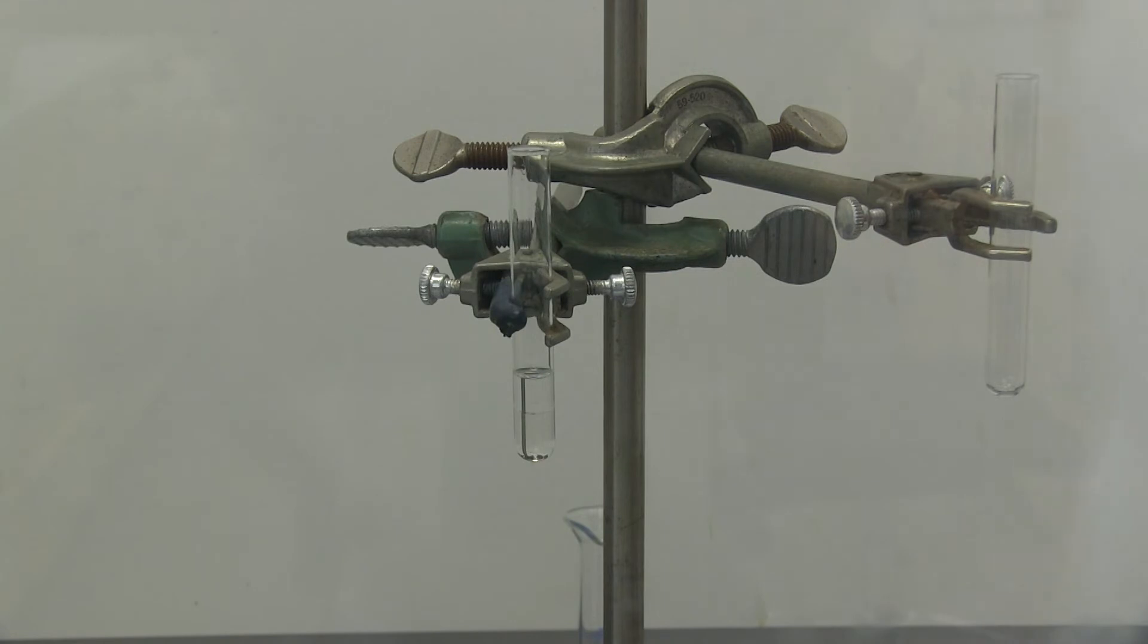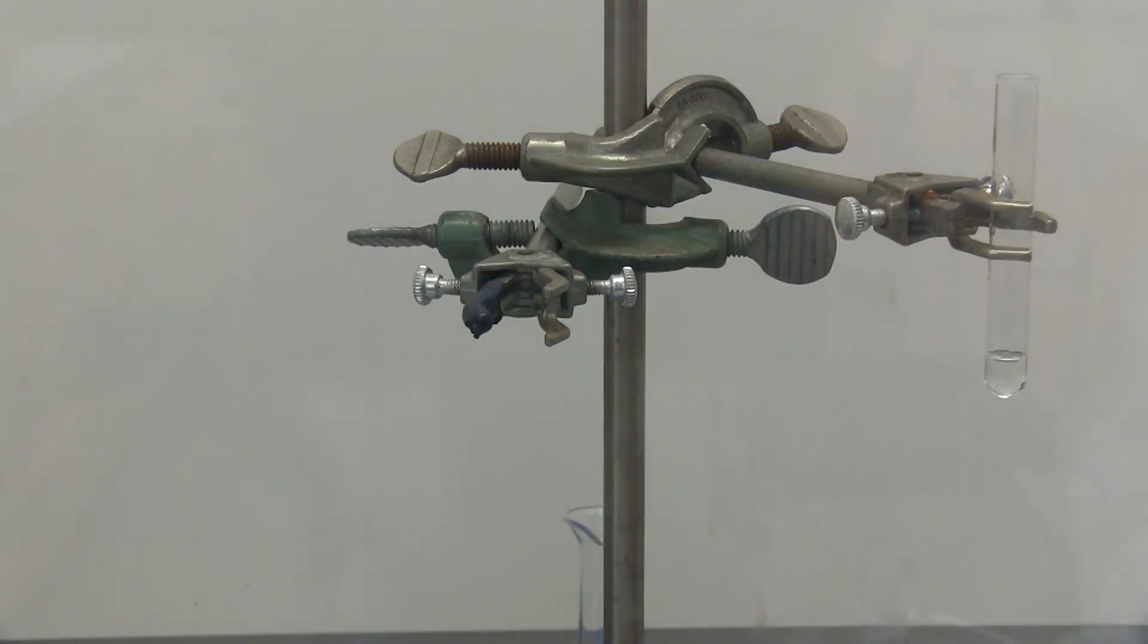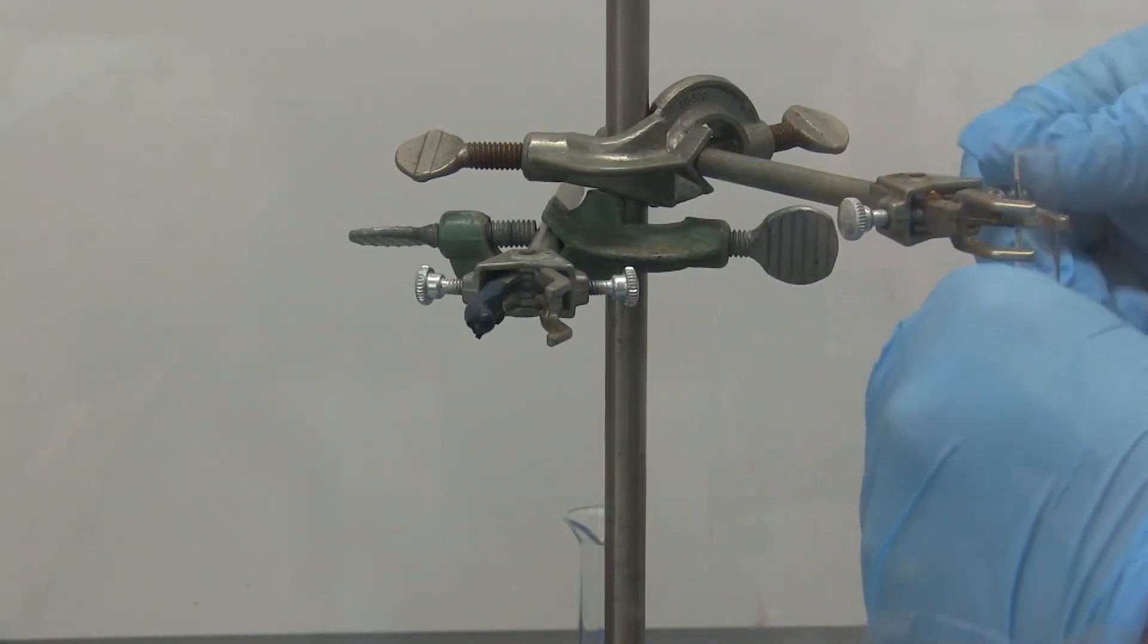Now that our layers are separated, we're going to take off the top layer and transfer it to a new test tube. Try and get just the top layer. We're going to dry it with some anhydrous sodium sulfate, so if you do get a little of the bottom layer it's okay. Take this one away, bring over our new test tube.